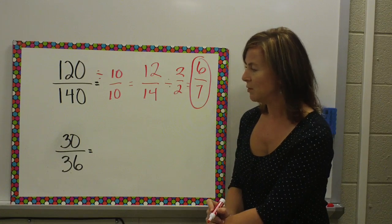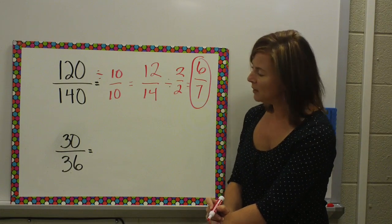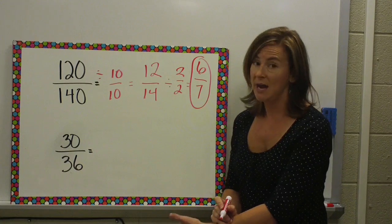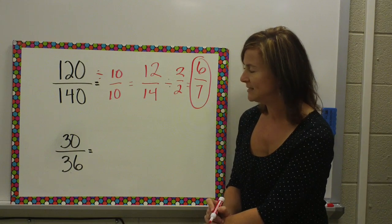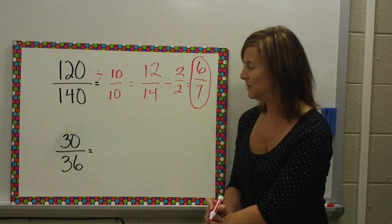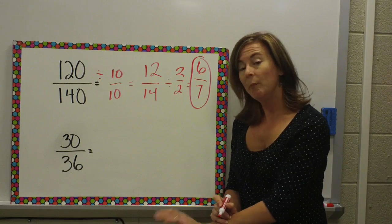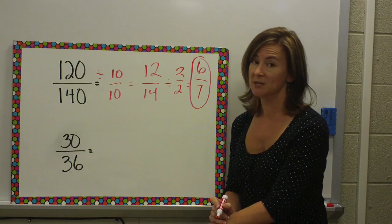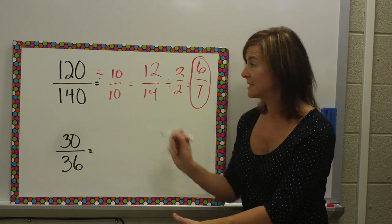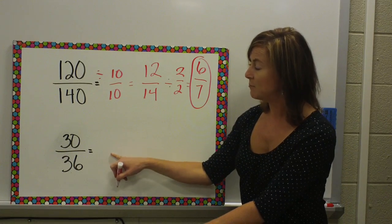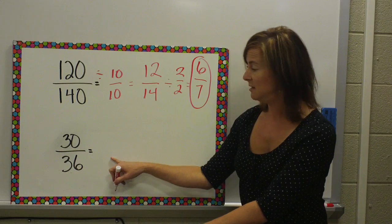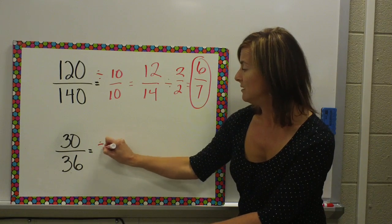Here's another example, 30 over 36. Now, knowing my multiplication facts, I know that the most efficient way to divide those two numbers would be dividing by 6. But, if I wasn't really good at my multiplication facts, I'm going to use those things that I remember. And, I'm going to think they both end in an even number. So, I can divide by 2.